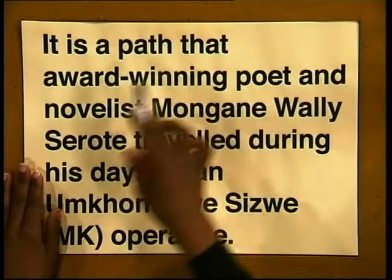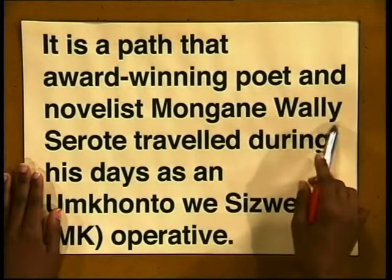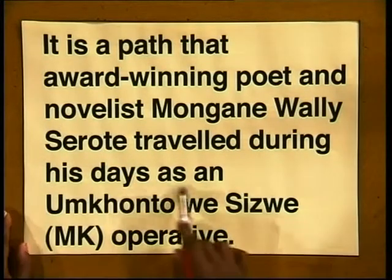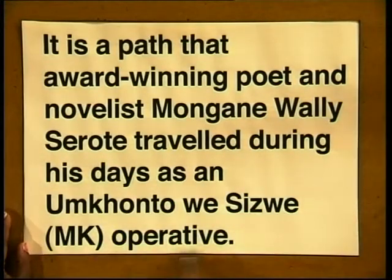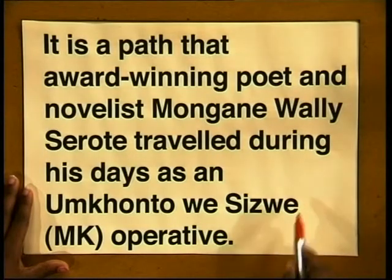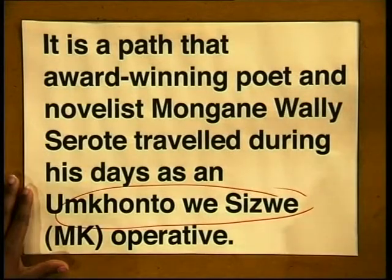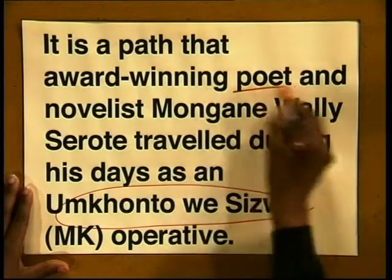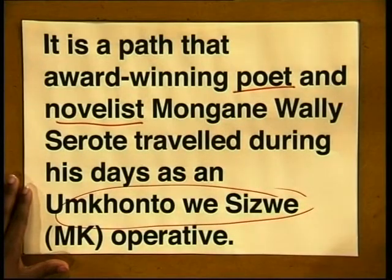Now let's look at the next section and see if we can identify the key statement. 'It is a path that award-winning poet and novelist Mongane Wale Sorote traveled during his days as an Umkhonto we Sizwe, or MK, operative.' We can state that Mongane Wale Sorote was a guerrilla fighter for Umkhonto we Sizwe. The other information about Sorote being a poet and a novelist is interesting, but not essential information in the context of this article.